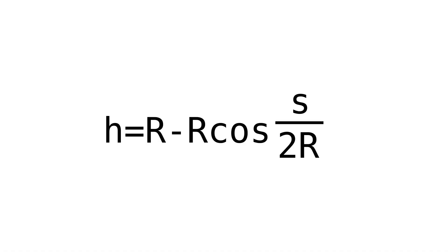Here is the actual equation that you would use to calculate the height of an arc given the arc length and the radius — in this instance being the radius of the Earth and the distance between two points on Earth's surface. Where H is the arc height, R is the radius, and S is the arc length, keeping in mind that this is in radians, not degrees.